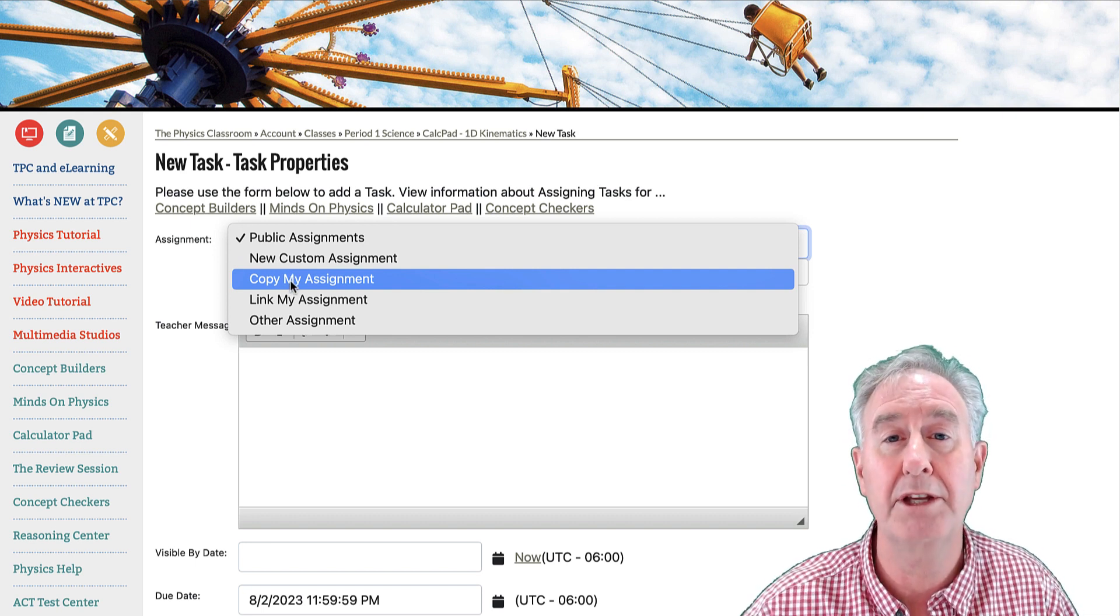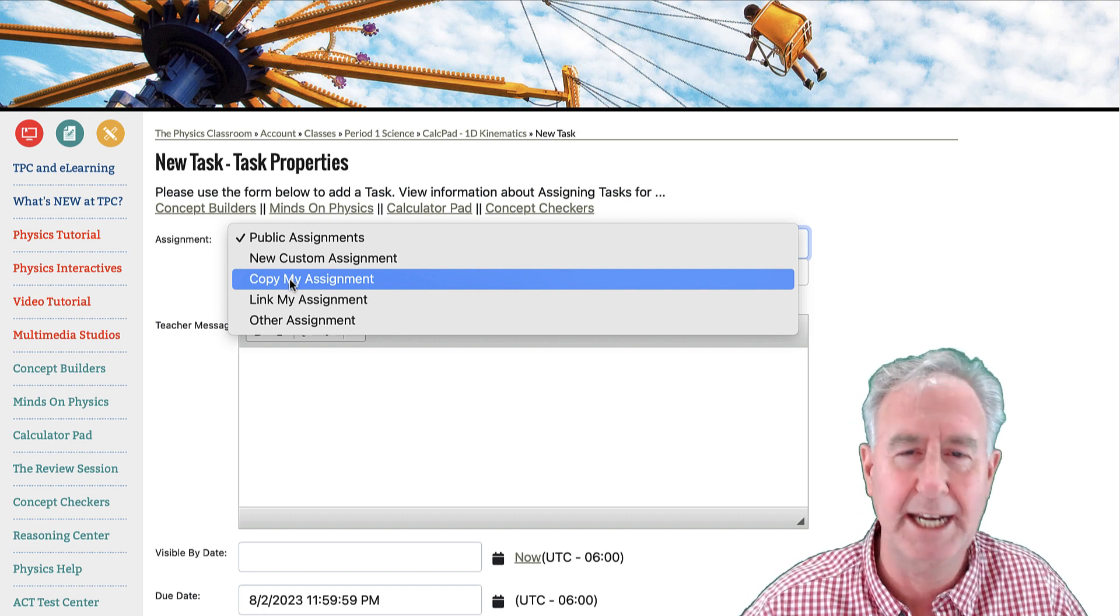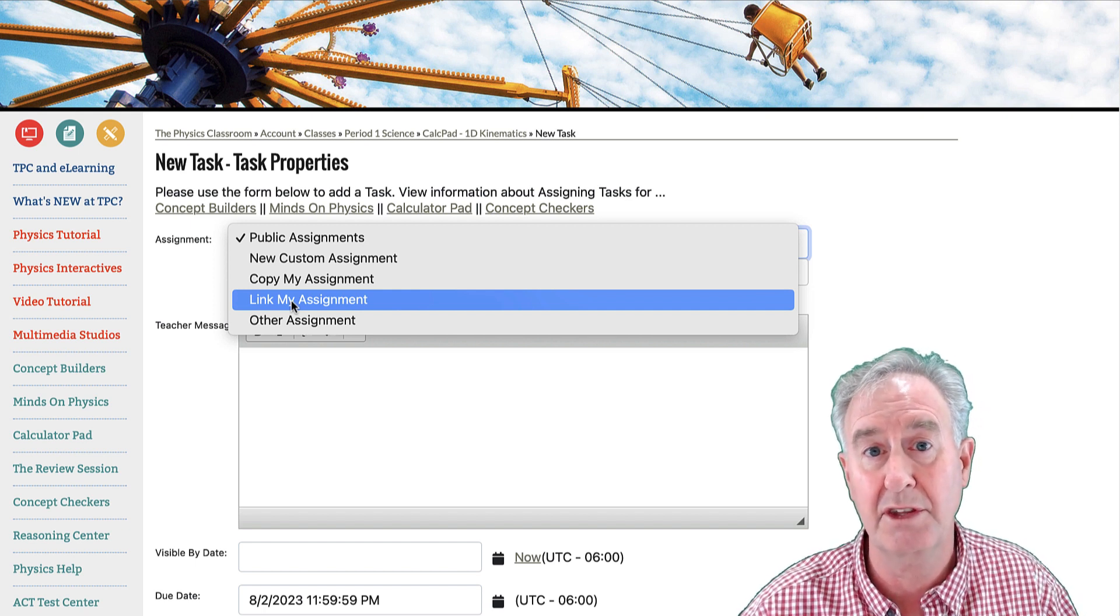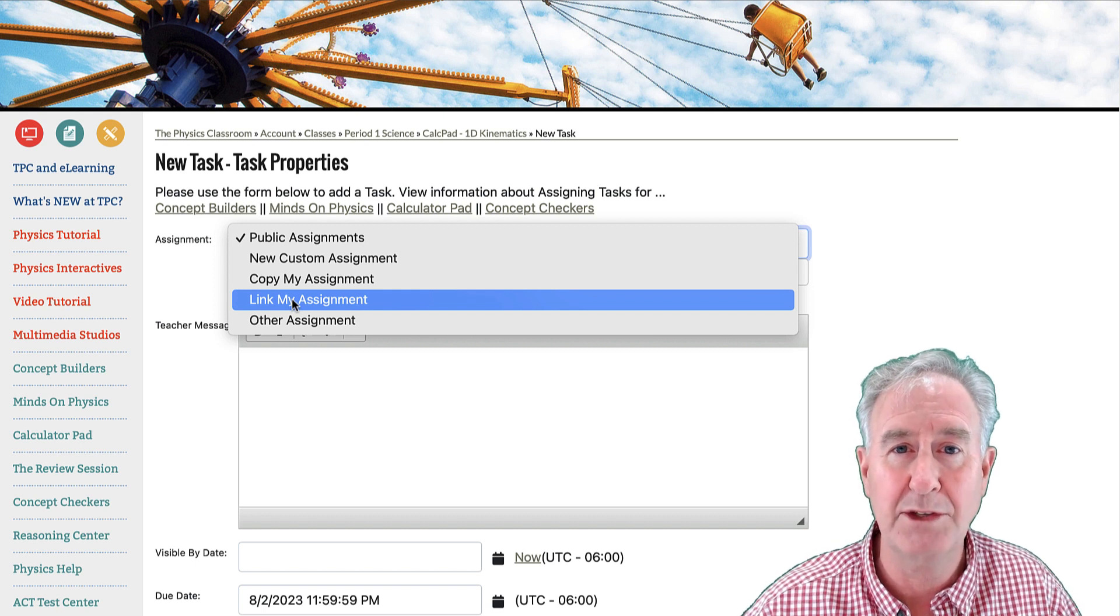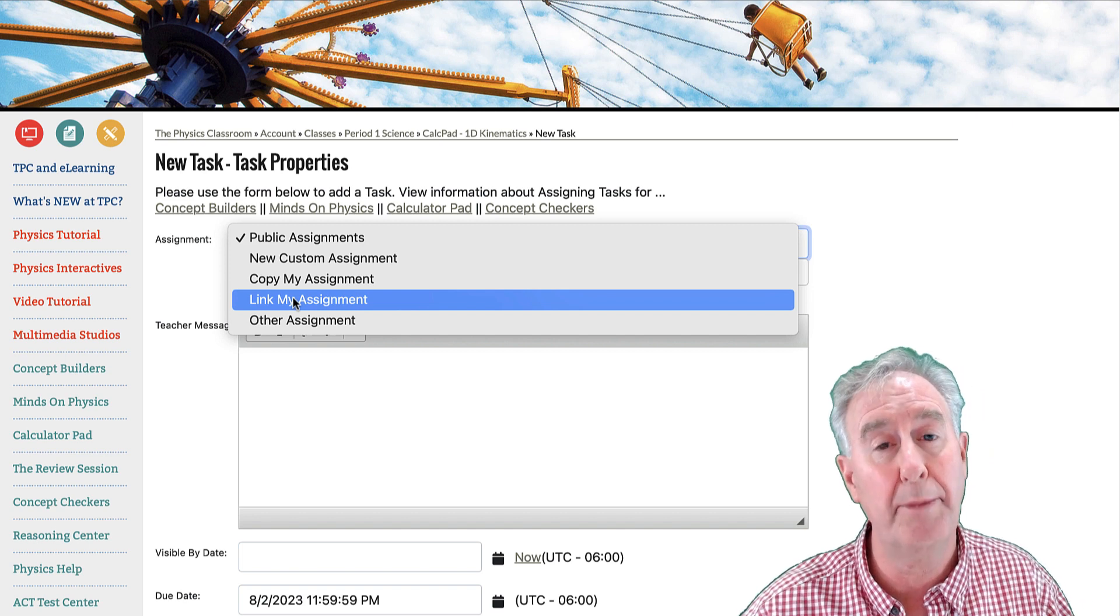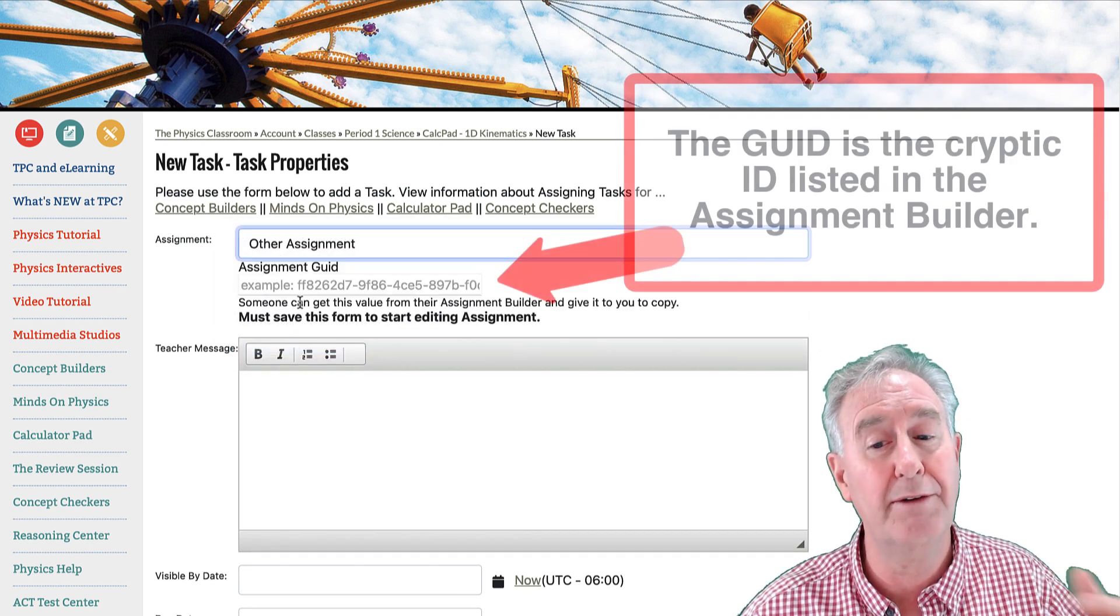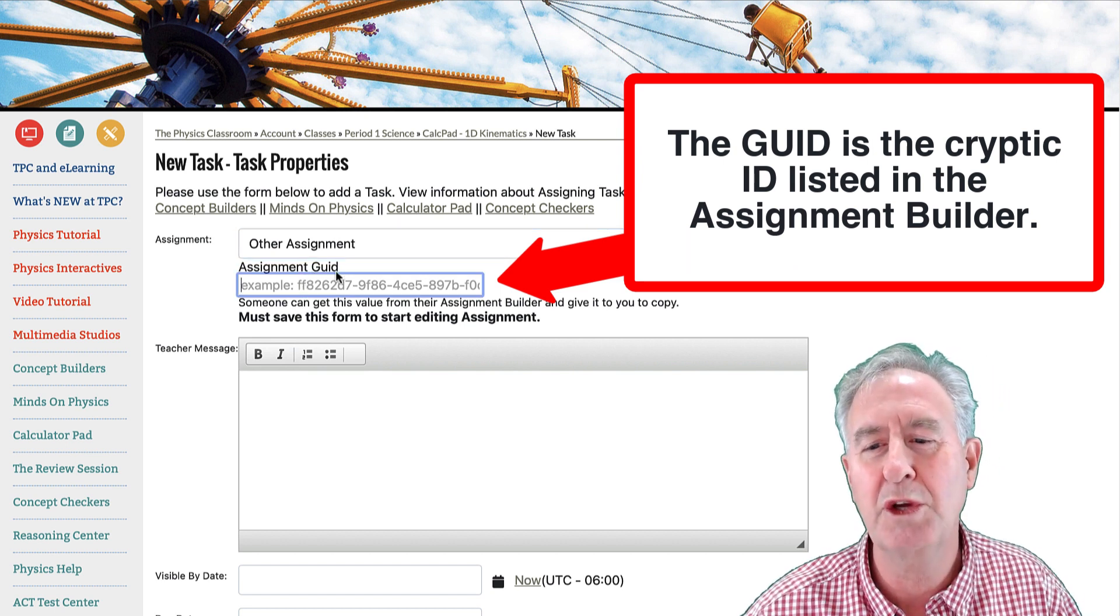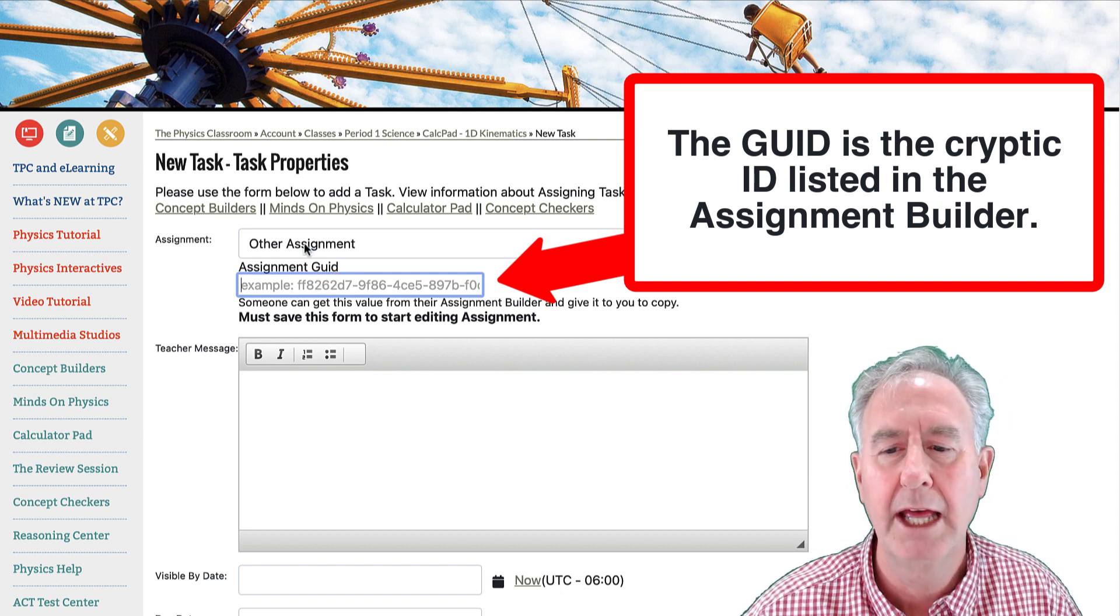Copy my assignment means you'll copy an assignment that exists in this class, and you'll maybe edit it afterwards. Link an assignment means you're going to link an assignment from another class to this class. It could be your colleagues. It could be yours. Linking means that whatever change you make in that assignment in that other class, the change will automatically show up in this class as well. In other assignments, it's like you have a colleague, and they made an assignment, and you want to use it. And so you get their GUID, or ID number. I'll show you where that is in a moment.